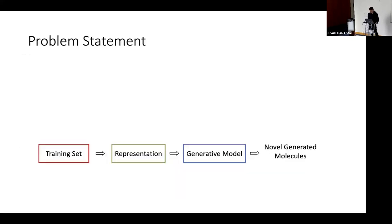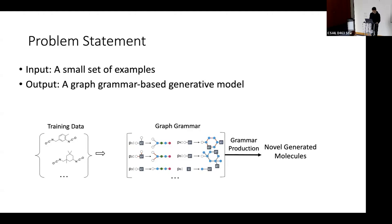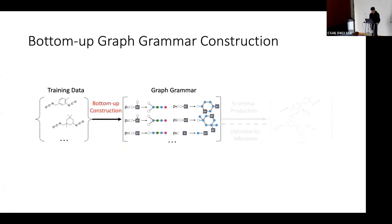Here is our problem statement: the input is a small set of examples — basically a few dozen, not tens of thousands. The output is a graph grammar-based generator model that can generate novel molecule structures. What we want is an automatic learning system — no manual work required — that can also optimize for certain metrics like desired properties, synthesizability, or diversity.